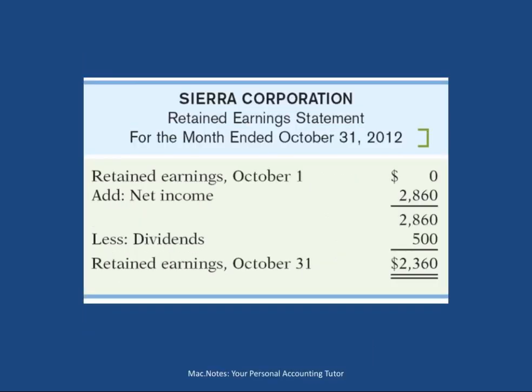The next statement, which is part and parcel of the income statement, is the retained earnings statement. This is a summary of the earnings the company has made for the shareholders and has not given back to them. The company just started October 1st, so it had no earnings to date. We add the net income from the income statement — two thousand eight hundred sixty — giving total retained earnings of two thousand eight hundred sixty. During October, the company paid five hundred dollars in dividends back to the shareholders, so we subtract that.